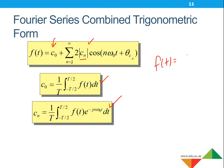The complex representation gives us the coefficient in complex form. If we simplify this — without going through all the details of the simplification — we can get this form. This is called the combined trigonometric form.